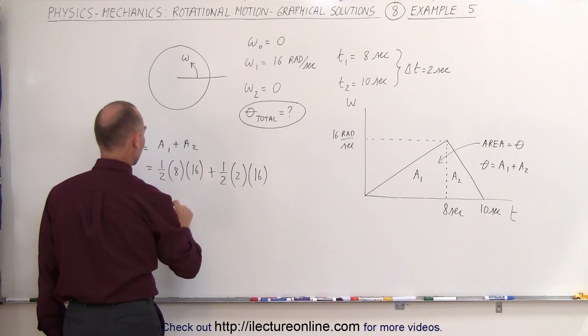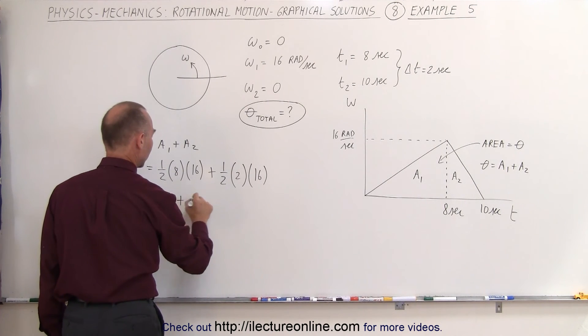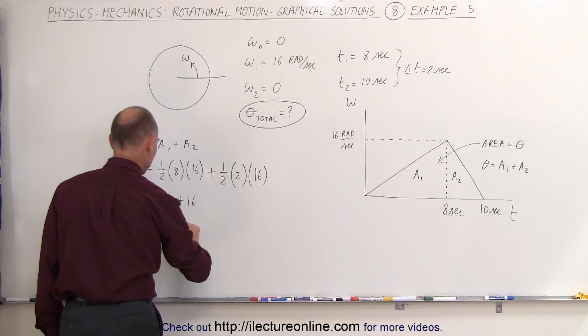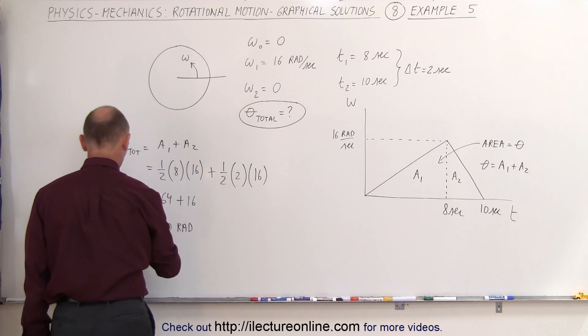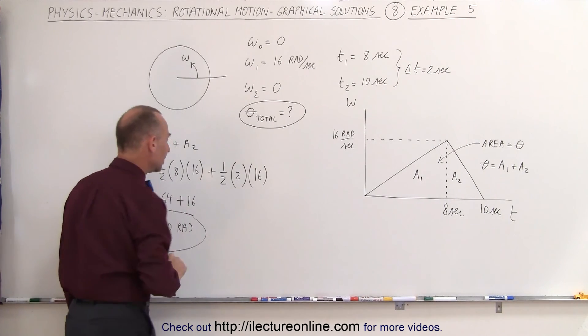This equals 4 times 16, which is 64, plus 16, which equals 80 radians. So theta total, in this case, is 80 radians.